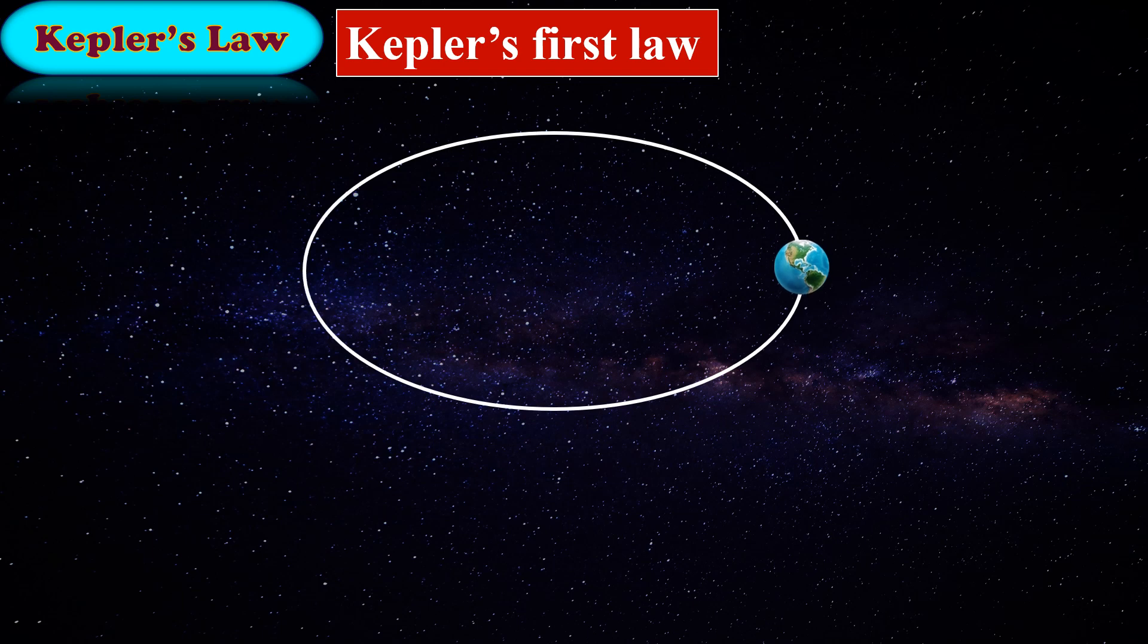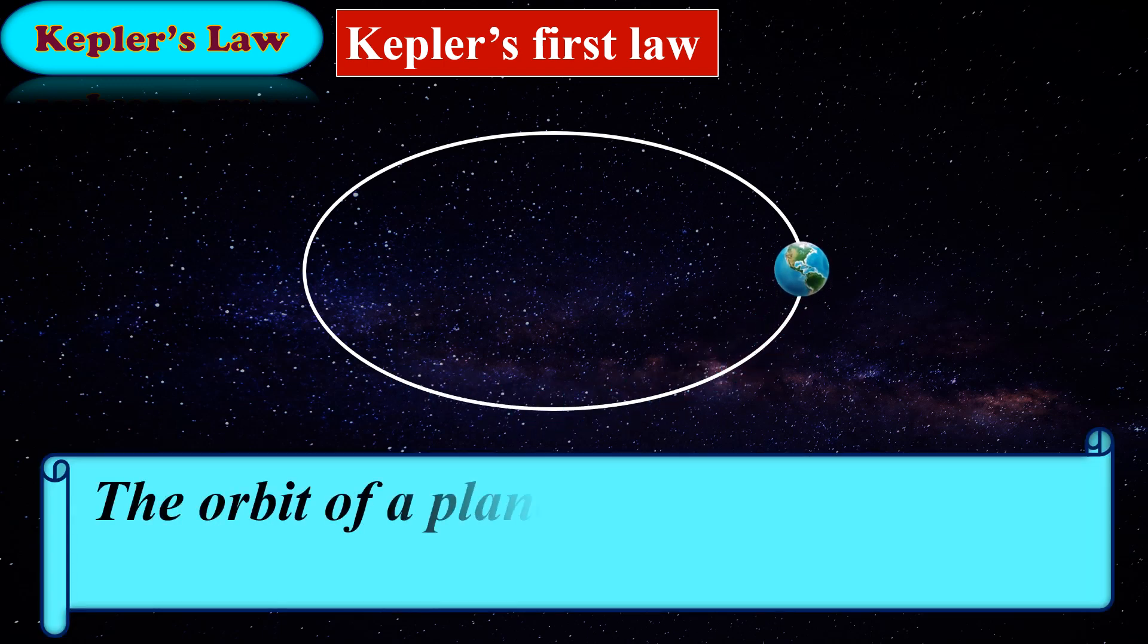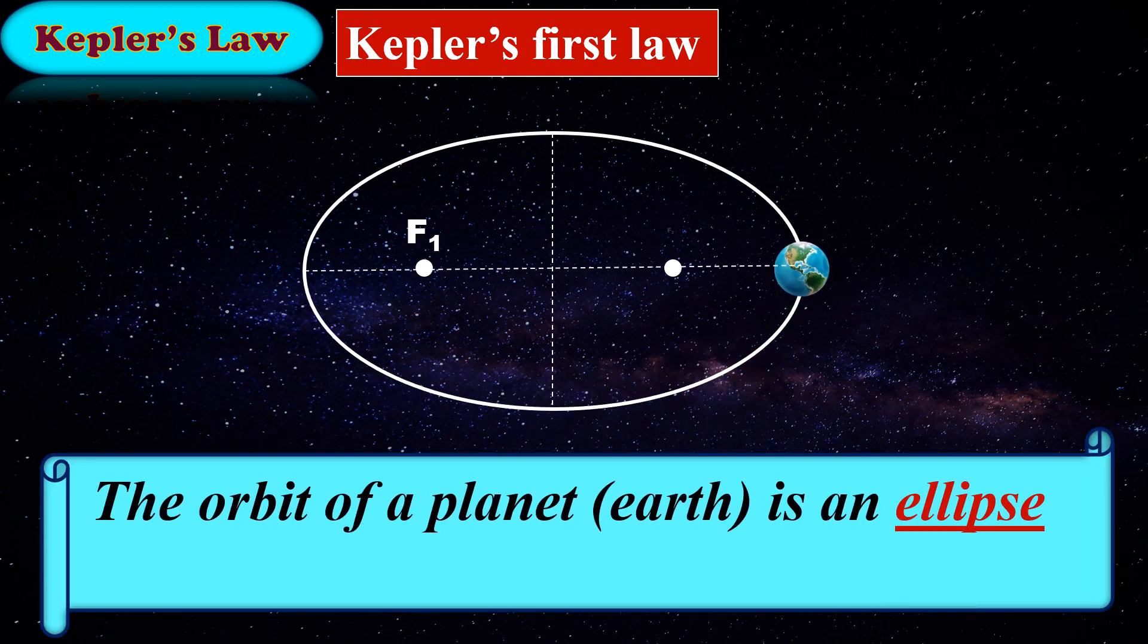The orbit of a planet, here Earth, is an ellipse. Let's consider two focus f1 and f2 inside the ellipse. We will consider any of these focus as the position of the sun.